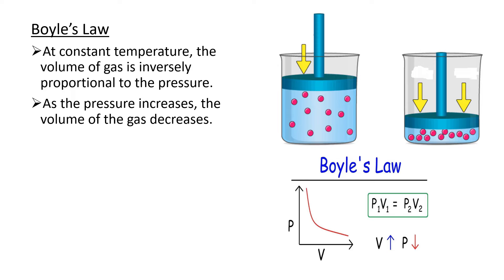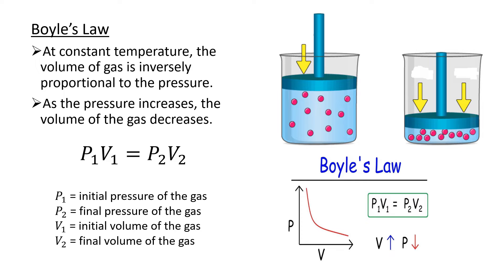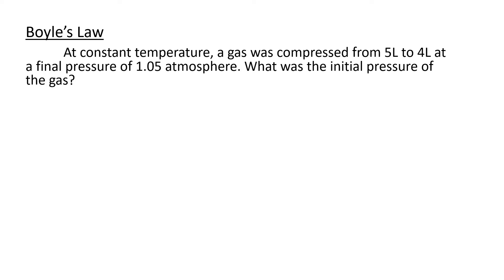Given that the temperature is constant, the relationship between pressure and volume is given by the equation P1V1 = P2V2, where P1 is the initial pressure, P2 is the final pressure, V1 is the initial volume, and V2 is the final volume. This equation shows that the product of initial pressure and initial volume equals the product of final pressure and final volume.